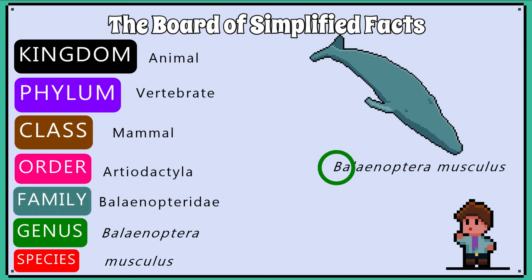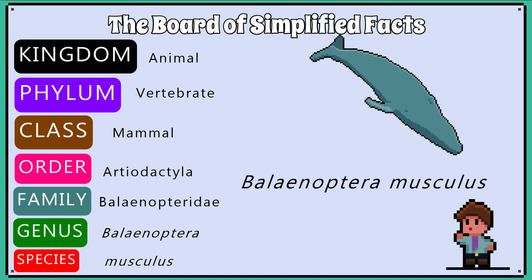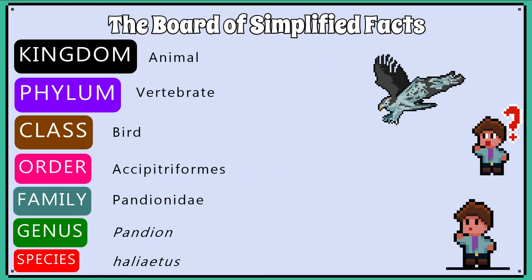Notice we capitalise the genus and use lowercase to start the species part of the scientific name. We also write it in italics, or you can underline the word to show that you understand the scientific name must be written in this style and format, as it is difficult to write in italics without using a computer.